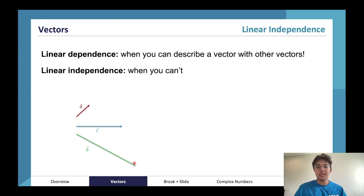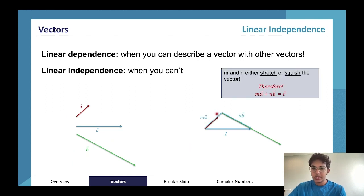Linear independence is when you can't. These three vectors here are linearly independent because we can't exactly describe them as a combination of the others. However, we do need to multiply and stretch and squish them before they can be linearly dependent.